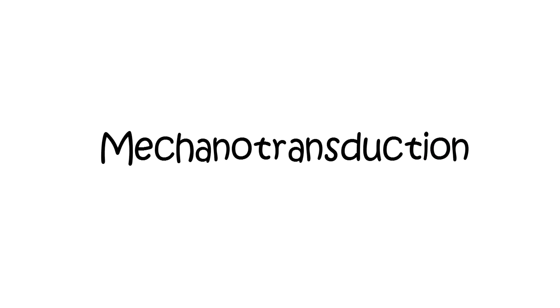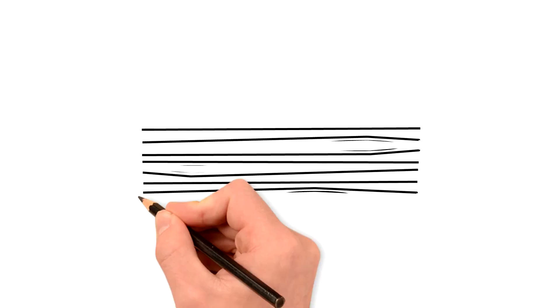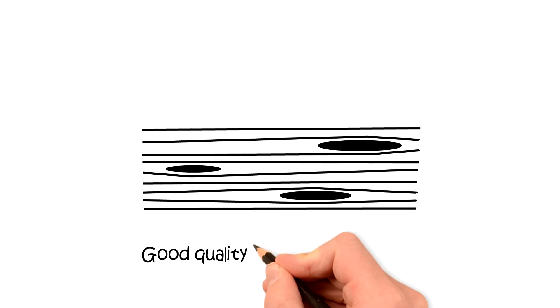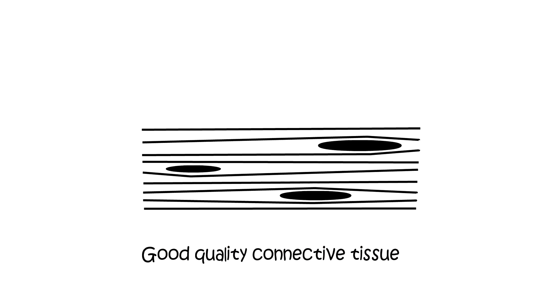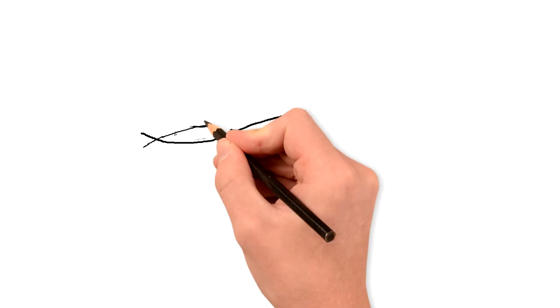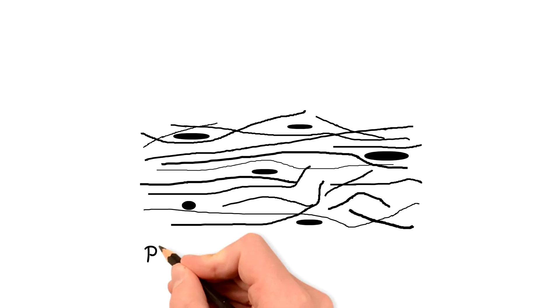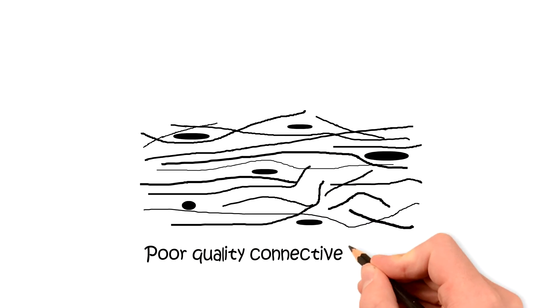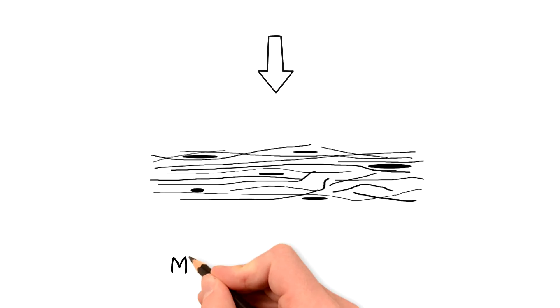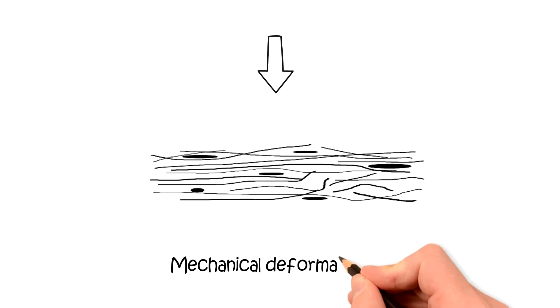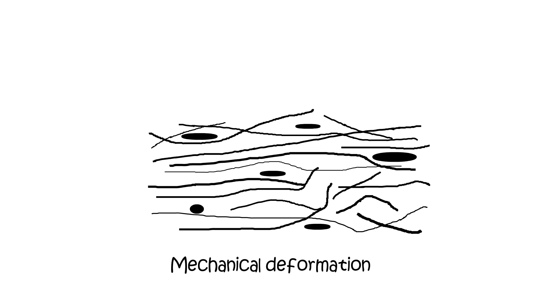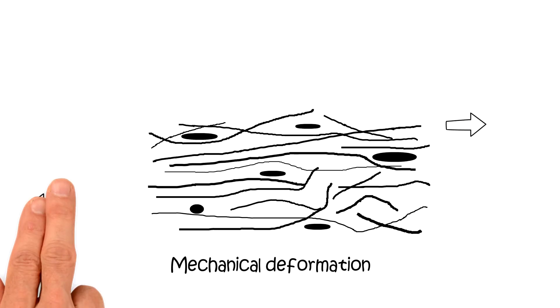Healthy connective tissue is well organized with tightly packed collagen fibers and an active population of connective tissue cells. In poor quality connective tissue, the collagen fibers are disorganized; in addition, they are of decreased size and strength. The application of a mechanical stimulus such as compression, tension, or torsion results in mechanical deformation of the connective tissue structure.